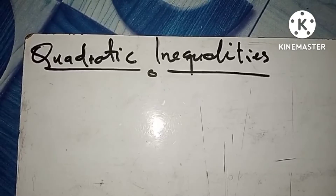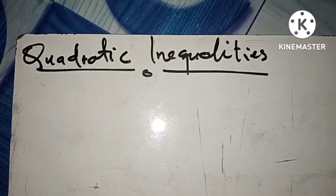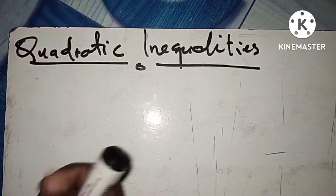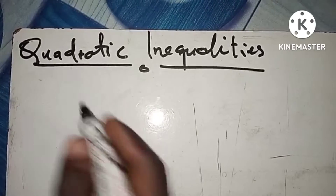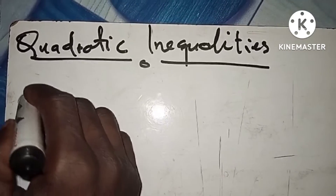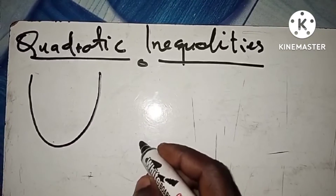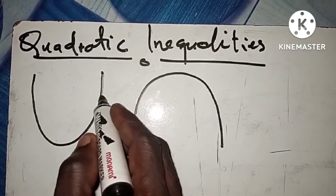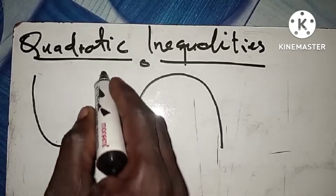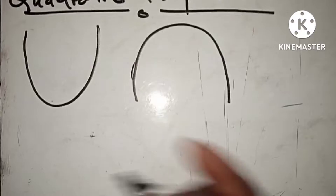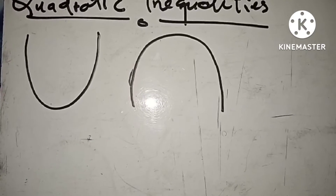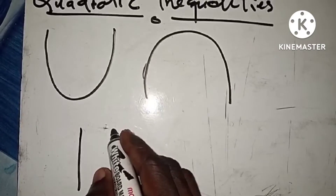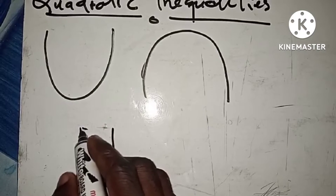This video is all about quadratic inequalities. We are going to discuss anything concerning quadratic inequalities. A quadratic can look something like this shape — you can think of maybe a basket handle. If this is a basket or any bucket, the handle can look like a quadratic.